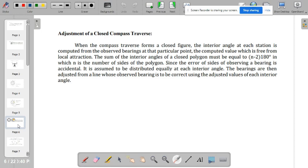So when the compass traverse forms a closed figure, the interior angle at each station is computed from the observed bearings at that particular point. So the computed value, which is free from local attraction. Now, the sum of the interior angles of a closed polygon must be equal to n minus 2 times 180 degrees, in which n is the number of sides of the polygon. Now, since the error of sites observing a bearing is accidental, it is assumed that to be distributed equally at each interior angle.